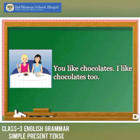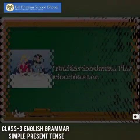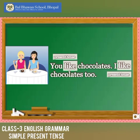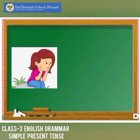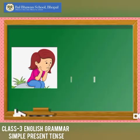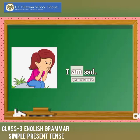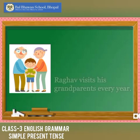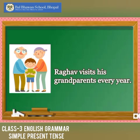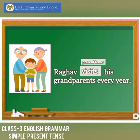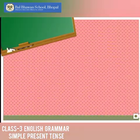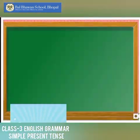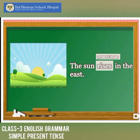'You like chocolates. I like chocolates too.' The verb 'like' is in the present tense and does not end in S. 'I am sad' — the verb 'am' is in the present tense; it tells us how the girl is feeling now. 'Raghav visits his grandparents every year' — the verb 'visits' tells us about an action that happens every year, so it is in the present tense. 'The sun rises in the east' — the verb 'rises' tells us about an action that always happens, so 'rises' is in the present tense.